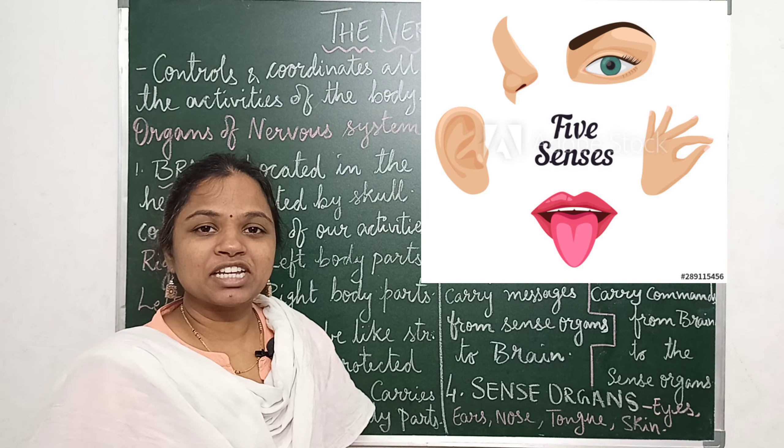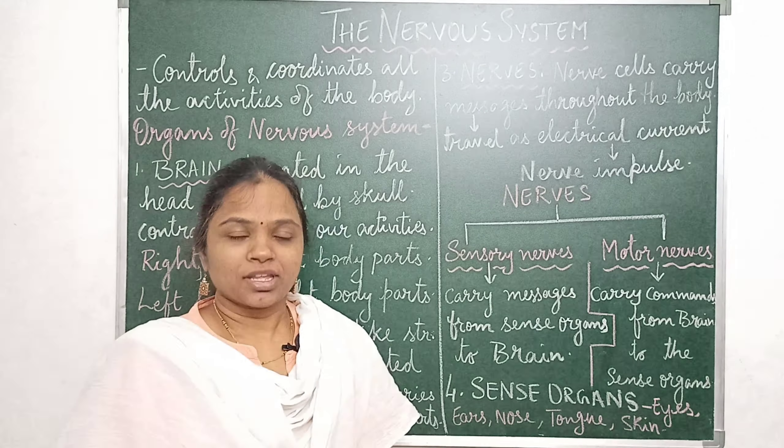The next important organ of the nervous system is the sense organs, which you have been learning from your lower classes. The human body consists of five sense organs: the eyes for vision, ears for hearing, nose for smell, tongue for taste, and skin for touch. These sense organs receive messages from the surroundings as a stimulus, and then through the sensory nerves, they pass the messages to the brain. The brain then commands them on how to act by the help of the motor nerves.